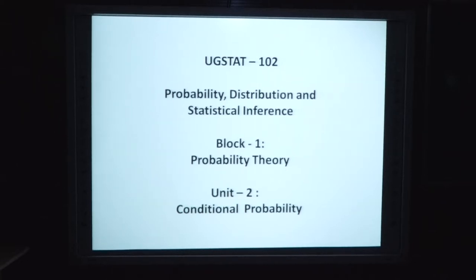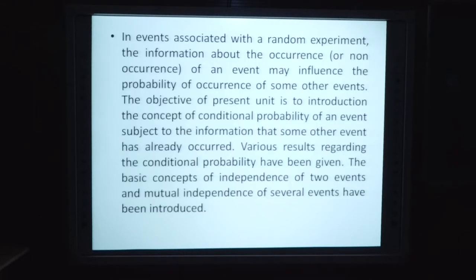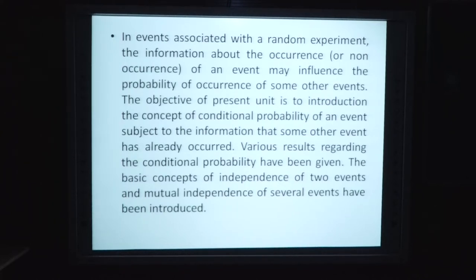Ye jo aaj humari unit hai - unit 2 conditional probability - iske baare mein aapko batana hai. In events associated with a random experiment, the information about the occurrence or non-occurrence of an event may influence the probability of occurrence of some other events. The objective of present unit is to introduce the concept of conditional probability of an event subject to the information that some other event has already occurred. Koi event pehle se aakar ho chuka hai, phir uske baad hum kisi ki probability ko find out karte hain, to woh humari conditional probability hogi.